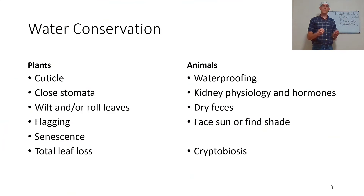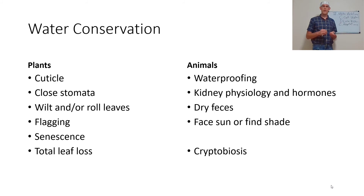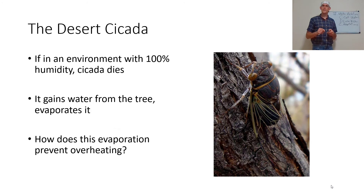Animals can waterproof with cuticles — much like that beetle's cuticle. The physiology of the kidney and secretion of various hormones can aid in water retention. Having drier feces also serves as water retention. Animals can face the sun or find shade to reduce water loss. There's also cryptobiosis, where an animal shrivels up and essentially waits — just add water. These are adaptations that animals and plants have to conserve water even when higher temperatures demand they lose a lot.